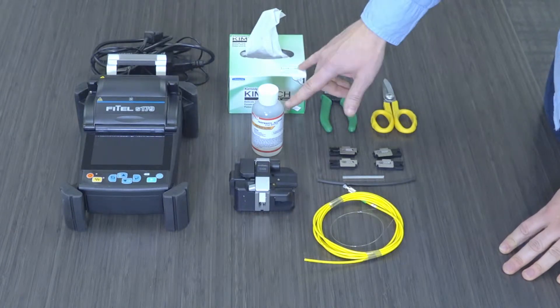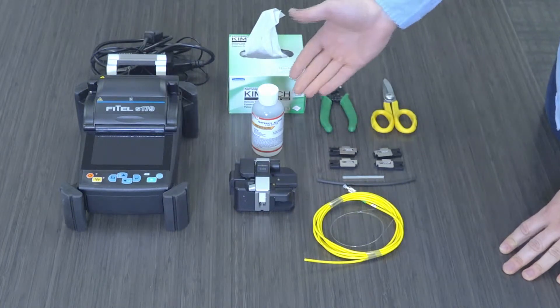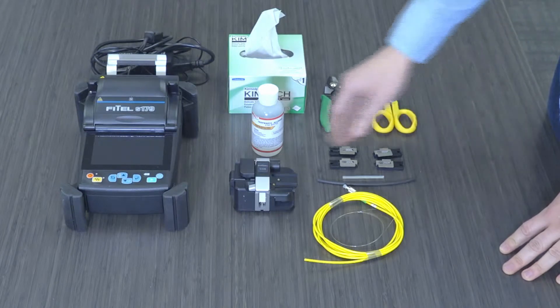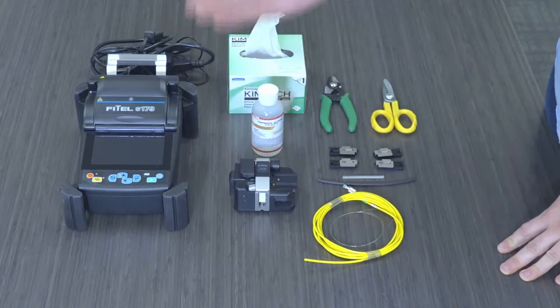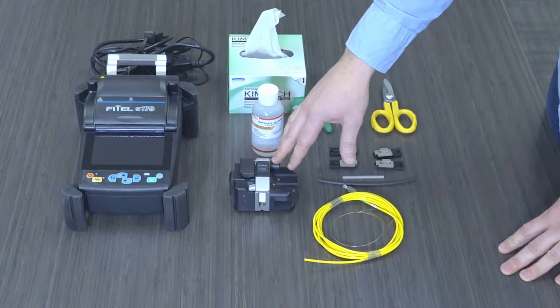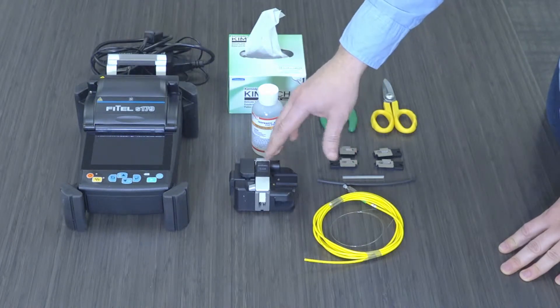We have some cleaning materials, some lint-free wipes and some isopropyl alcohol. We also have a fiber cleaver which will give us a nice 90 degree flat clean cut on each of the fiber faces that we're trying to fuse together.